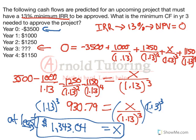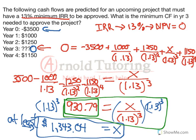That's how we show the algebra works. The faster calculator method is to dump all of these cash flows into your cash flow section in your calculator, including a cash flow of 0 in year 3. Then calculate the NPV using 13% as the interest rate. When we do that, you're going to get a negative $930.79 NPV. We don't want it to be negative — we want it to be 0 — so we need a positive $930 from our year 3 cash flow being discounted, which gets us to this point just by doing the NPV calculation with a 0 in there.